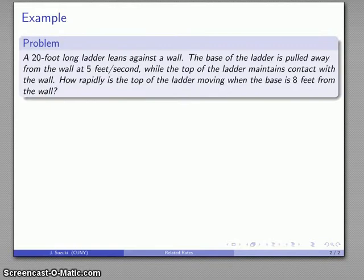So for example here, we have a 20-foot ladder leaning against a wall. The base of the ladder is pulled away from the wall at 5 feet per second, while the top of the ladder maintains contact with the wall. How rapidly is the top of the ladder moving when the base is 8 feet from the wall?